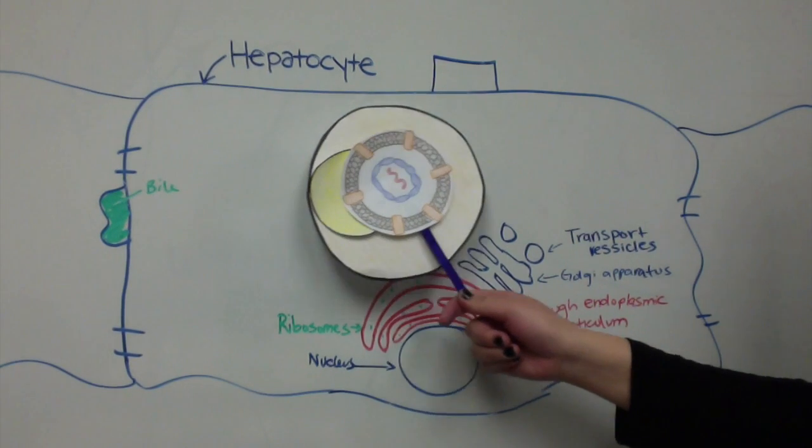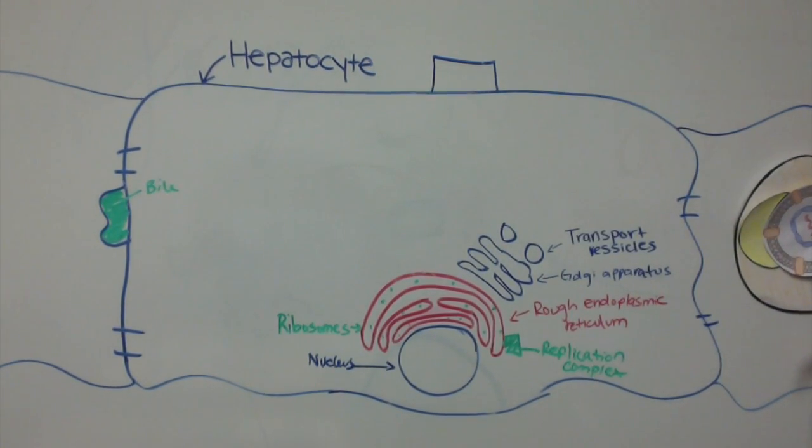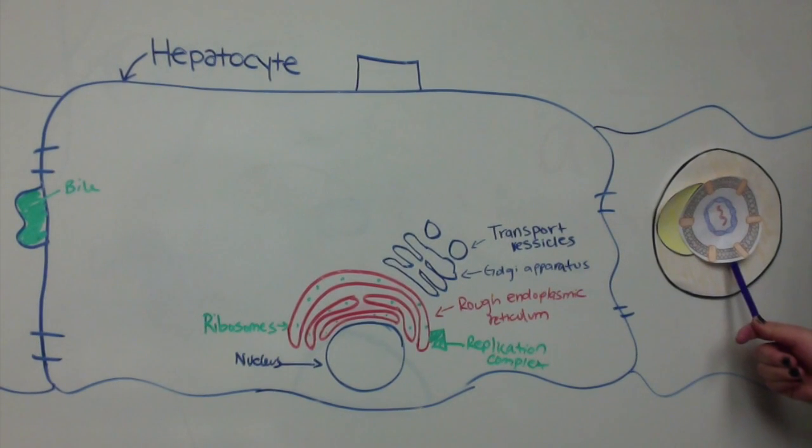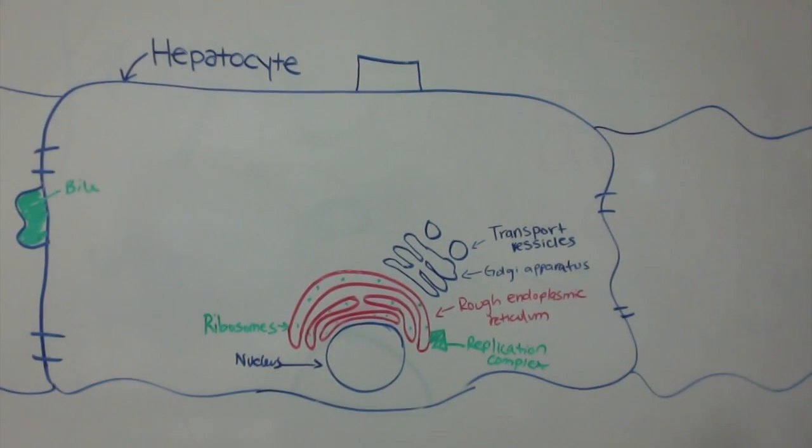The HCV virus invades adjacent hepatic cells through cell-to-cell transmission. Hepatocytes are tightly packed together, allowing HCV to invade more easily.